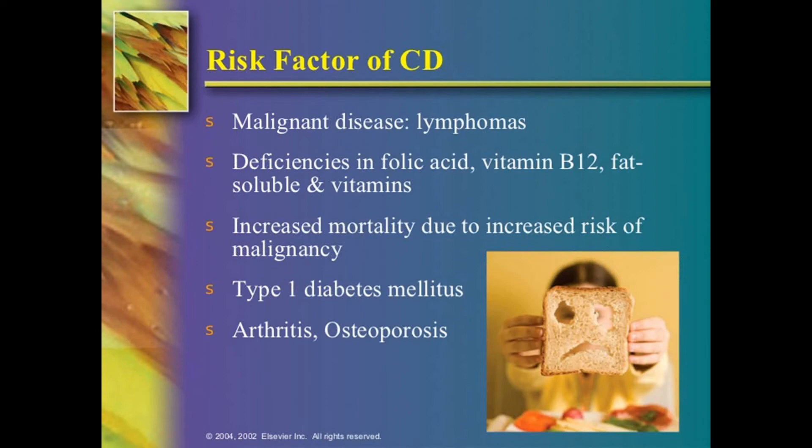The risk of malignant disease can occur if not treated properly for many years — lymphoma is the most important complication. There is also deficiency in folic acid, vitamin B12, and fat-soluble vitamins, along with increased mortality due to increased risk of malignancy — adenocarcinoma can also occur. Type 1 diabetes may be associated as part of polyglandular autoimmune disease. Arthritis can occur because you are losing proteins, carbohydrates, vitamins, calcium, and vitamin D. Osteoporosis is also a consequence.